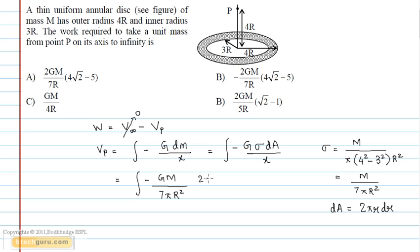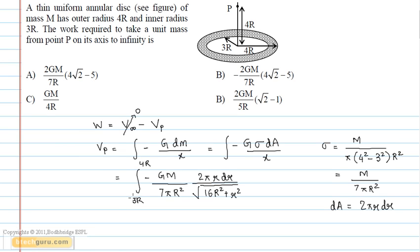upon under root of 16 R square plus r square, where under root of 16 R square plus r square is the distance of point P from the mass element. We will integrate this dr from 3R to 4R. Solving this, we get Vp is equal to minus 2 gM upon 7R into 4 root 2 minus 5.